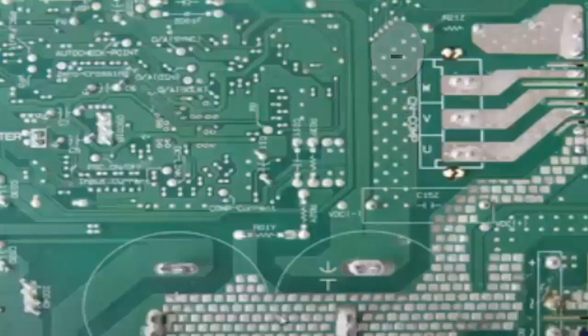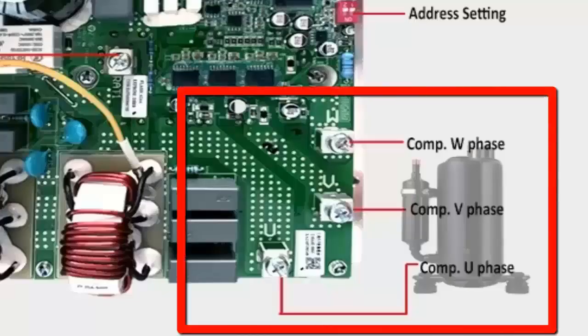Step 5: Identify the output points UVW. These can be identified by following the tracks from the compressor connectors to the IPM electronic circuit.